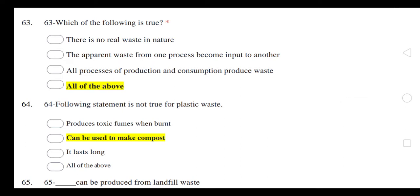Which of the following is true? These statements are all true: there is no real waste in nature, and the apparent waste from one process becomes input to another. Which waste can be input into a process? And all processes of production and consumption produce waste.